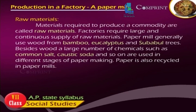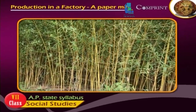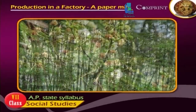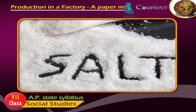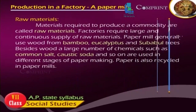Raw Materials: Materials required to produce a commodity are called raw materials. Factories require a large and continuous supply of raw materials. Paper mills generally use wood from bamboo, eucalyptus, and subabul trees. Besides wood, a large number of chemicals such as common salt, caustic soda, and so on are used in different stages of paper making. Paper is also recycled in paper mills.